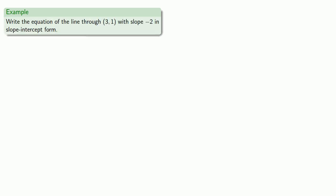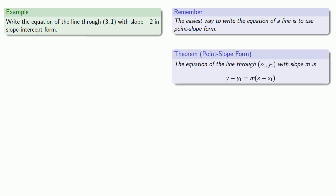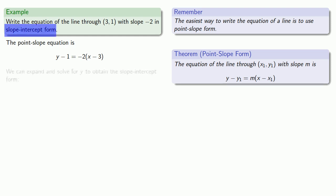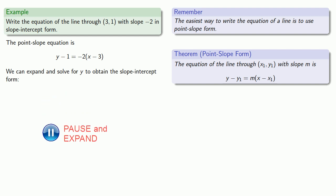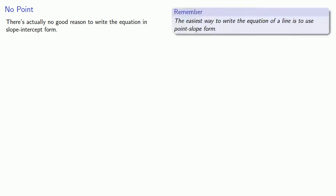How about writing the equation of a line in slope-intercept form? Let's try to write the equation of the line through (3, 1) with slope -2 in slope-intercept form. The important thing to remember is that the easiest way to write the equation of a line is point-slope form. Once we have a point and a slope, we can write down the equation immediately. Because the problem asks us to, we should rewrite this in slope-intercept form by expanding and solving for y. In the grand scheme of things, there's actually no good reason to write the equation in slope-intercept form — point-slope form is the easiest and fastest way, and we really don't need any other form.